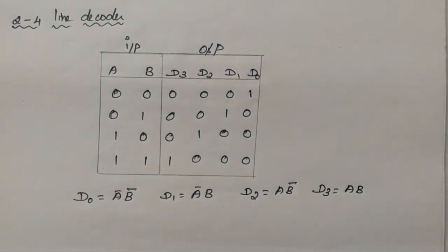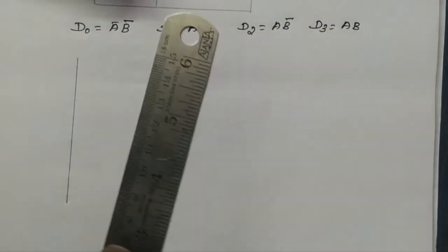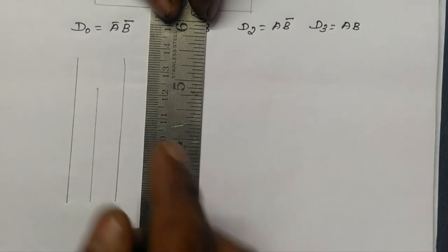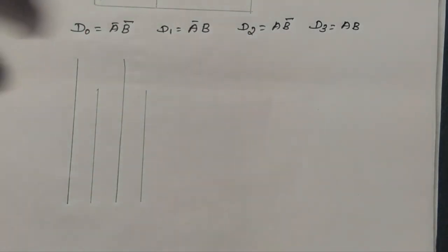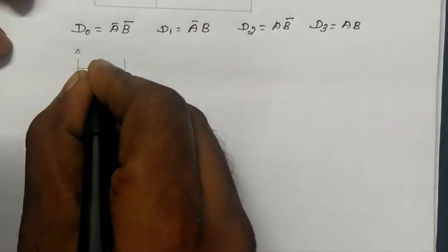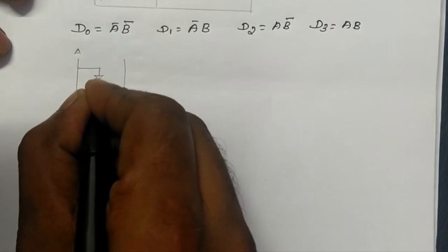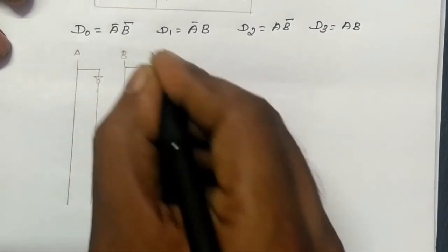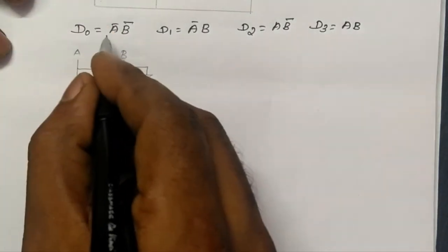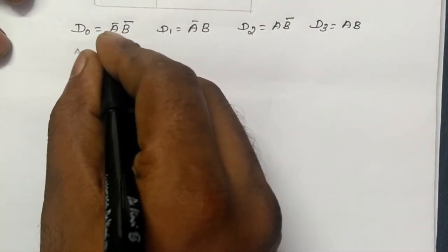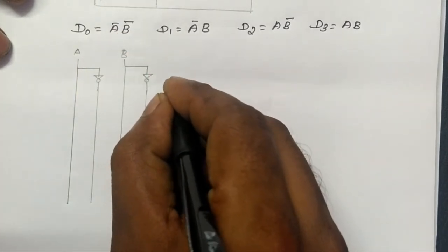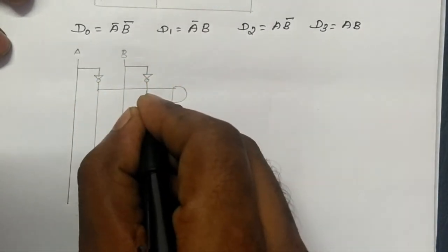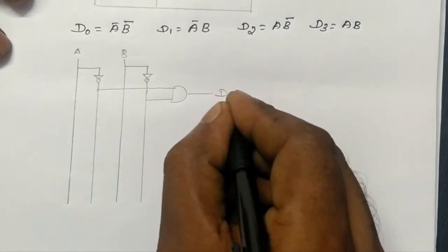Now we will go for the implementation — the logical diagram. Here input A has its true value, and through a NOT gate we get its complement. Likewise for input B, we get B and its complement. D0 is the AND operation between A-bar and B-bar, so we need an AND gate with inputs A-bar and B-bar, which gives D0.